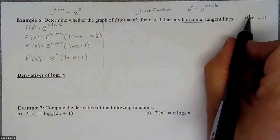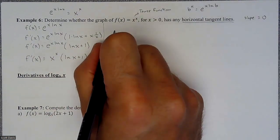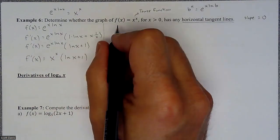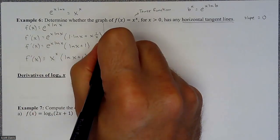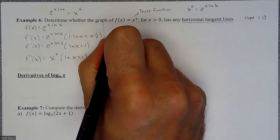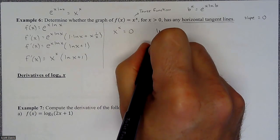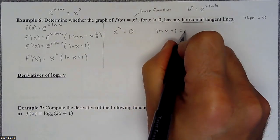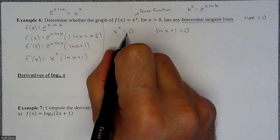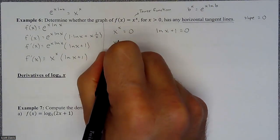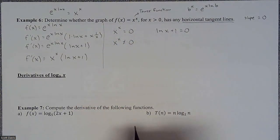We need that because now we need to set it equal to zero to figure out when is this thing equal to zero. Since we have factors naturally, which is perfect, we're going to take each factor x^x and set it equal to zero, and we're going to take the natural log of x plus one and set it equal to zero. So your x^x doesn't actually equal zero. You can't.